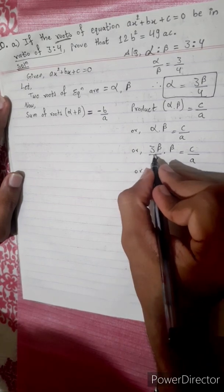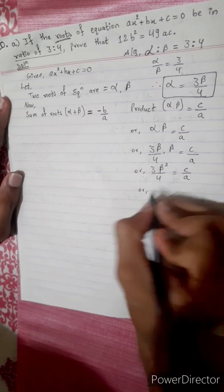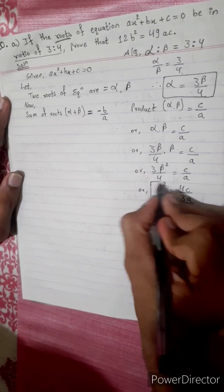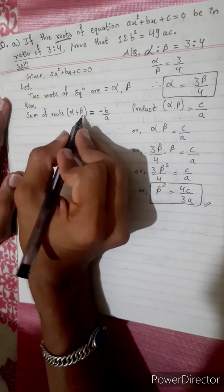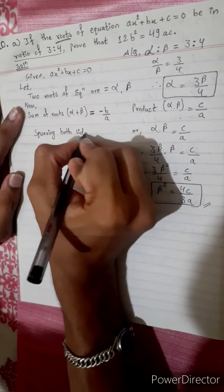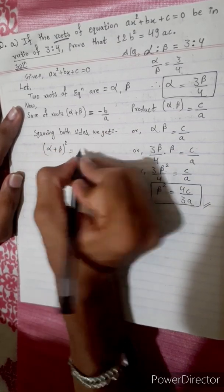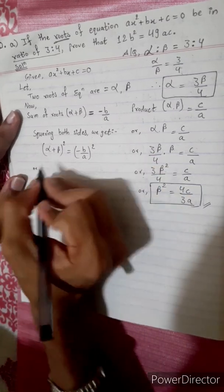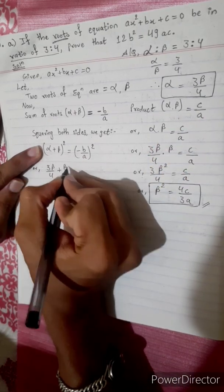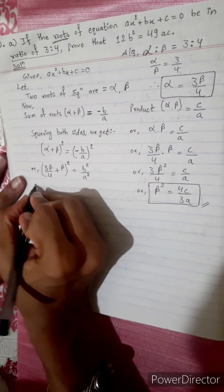Substituting alpha equals 3 beta by 4 into the sum of roots formula, squaring both sides: alpha plus beta whole square equals minus b by a whole square, giving b squared by a squared.